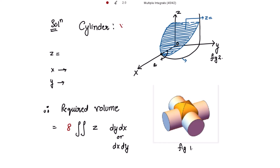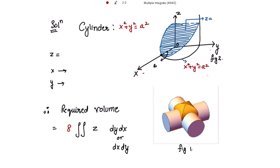The section of the cylinder x² + y² = a² is the circle x² + y² = a² in the xy-plane. It is evident that z is to be evaluated over the quadrant of this circle in the first quadrant.